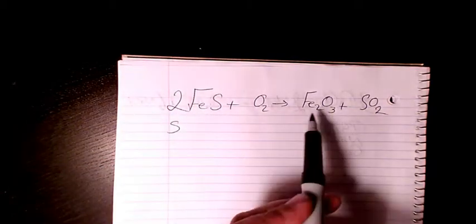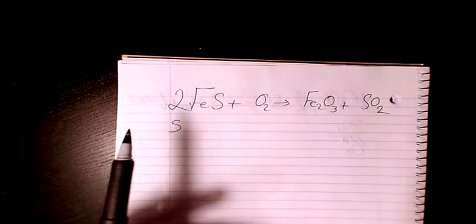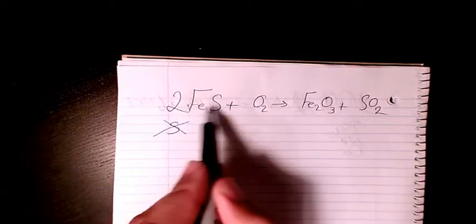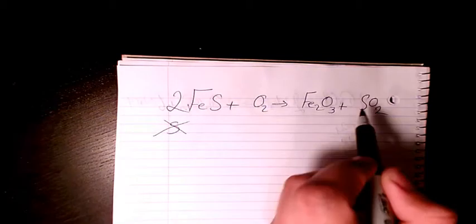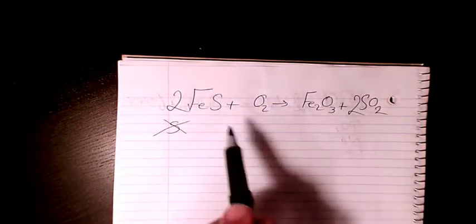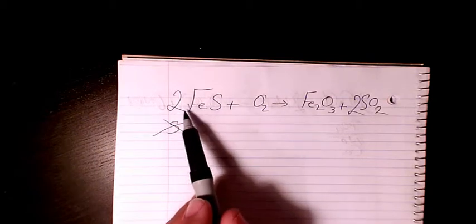So we just put two here to balance Fe, but we figure out S is not balanced anymore. So in order to balance it again, we need to multiply this one by two. So we have two here and two here.